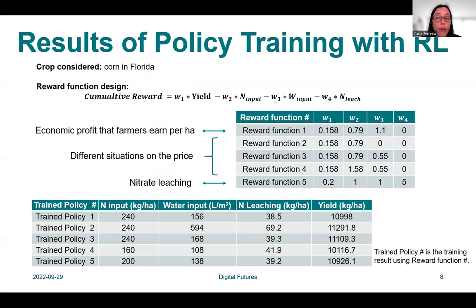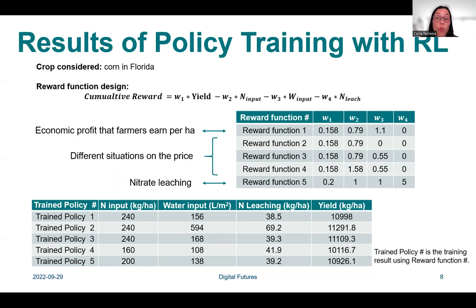The performance of this framework is validated with a case study of maize crop in Florida. The reinforcement learning-based policy training was investigated using different reward functions, representing different trade-offs among crop yield. The reward function, in general, represents the goal that the agent tries to maximize during training. In our case, we defined the reward function as a weighted sum of crop yield, nitrogen fertilizer input, irrigation water input, and nitrate leaching. We have five different reward function designs in total.